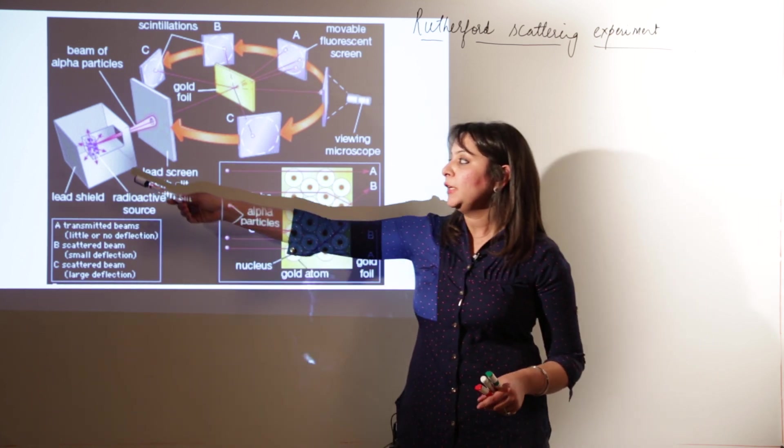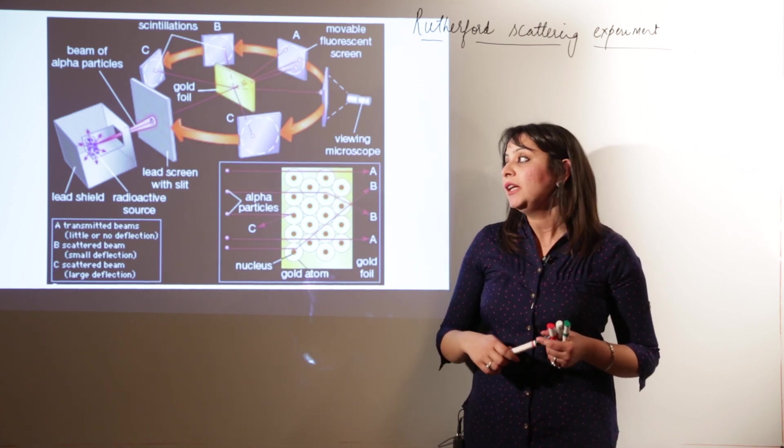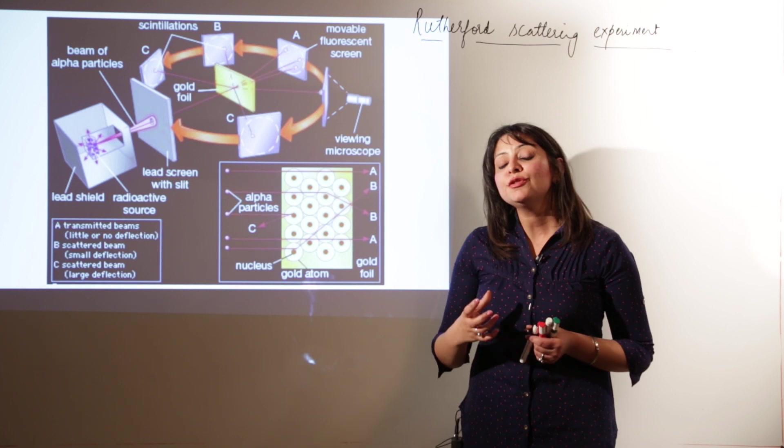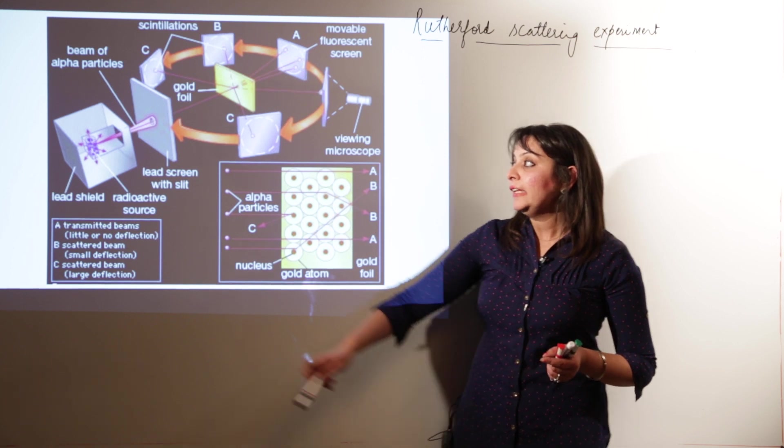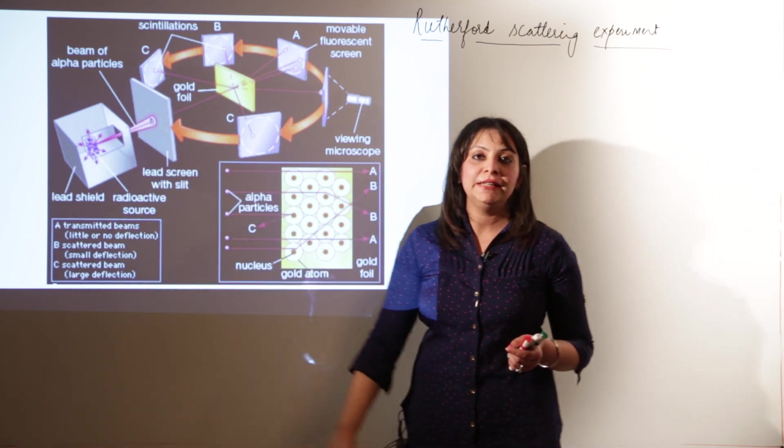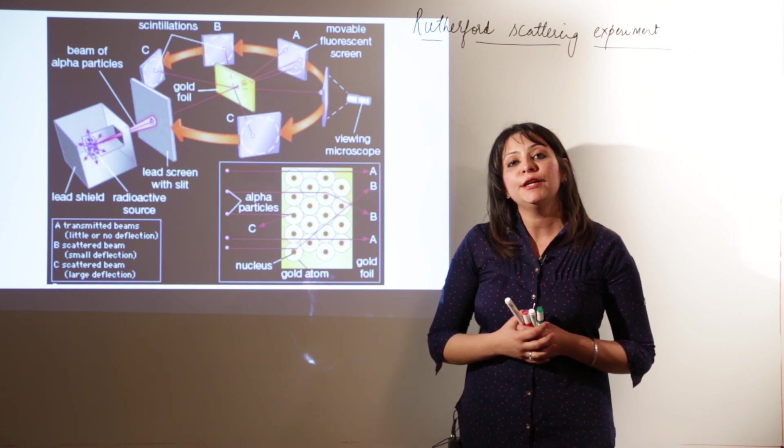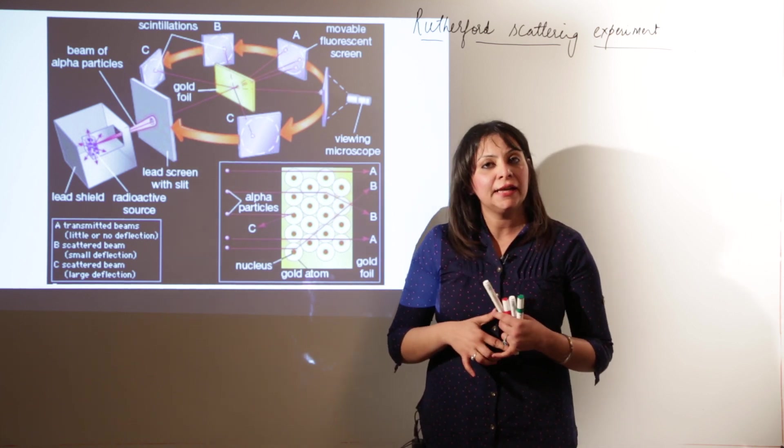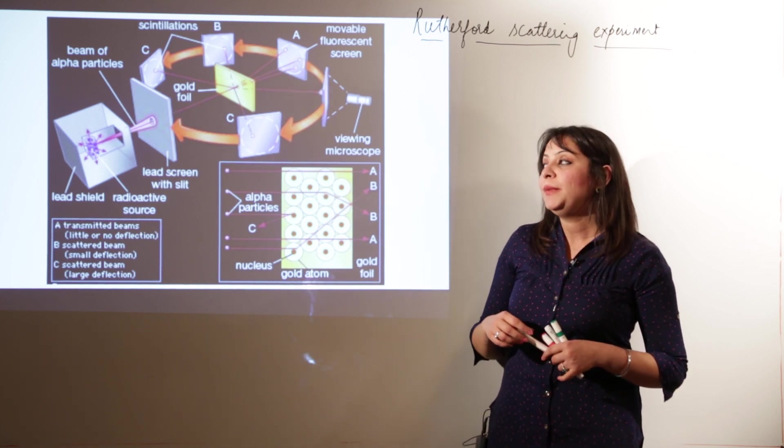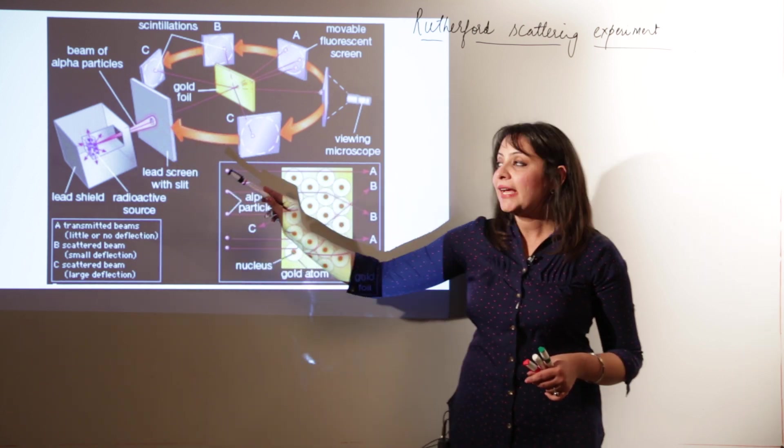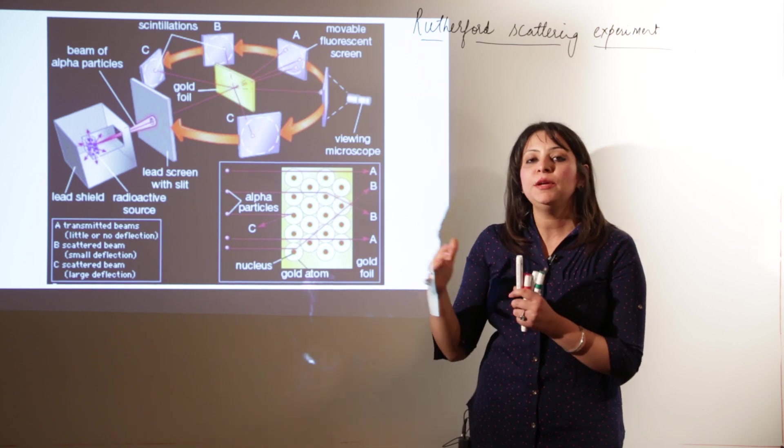So he took a lead block. As I have told you, lead is inert. We have done in radioactivity that lead is used to keep the radioactive material because it is inert towards it. And it contained the radioactive material. As you know, radioactive material has the tendency to emit certain kinds of radiations: alpha, beta and gamma. Out of those three radiations, alpha radiation was made to pass through this lead sheet. This lead sheet contained a hole in it so as to obtain a fine beam of rays.